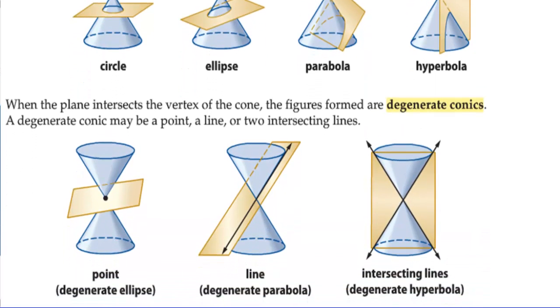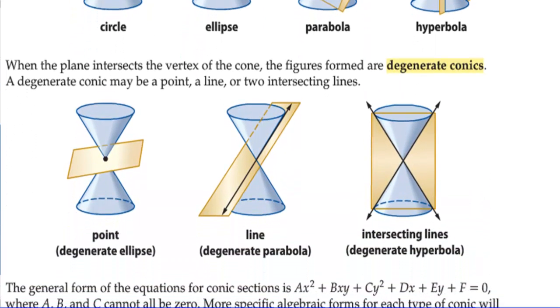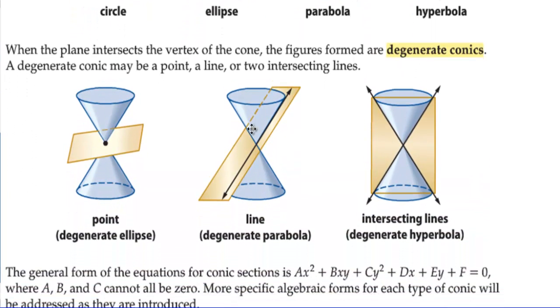When the plane intersects the vertex of the cone, the figures formed are degenerate conics. A degenerate conic may be a point, a line, or two intersecting lines.